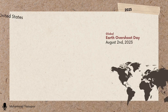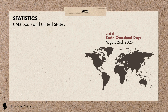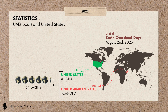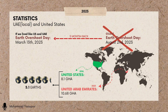If in 2023 we were to live like the UAE — currently amongst the highest contributors in the world at 10.68 GHA — or the USA, last reported in 2018 with 8.1 GHA of ecological footprint, both countries require 5.1 Earths to sustain their ecological output. Earth's Overshoot Day would come much sooner — 5 months sooner to be precise — on March 13, 2023.